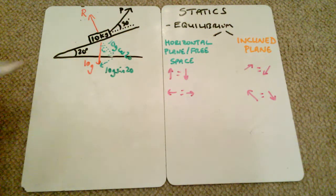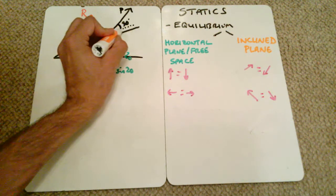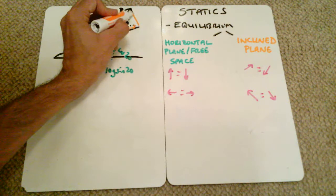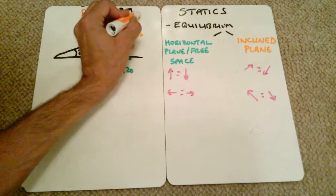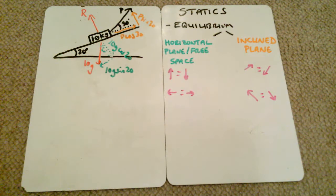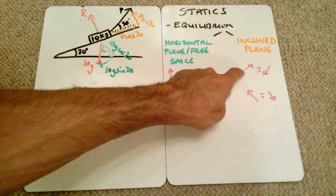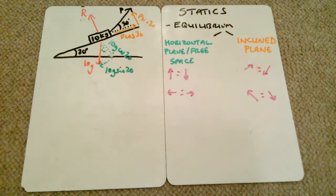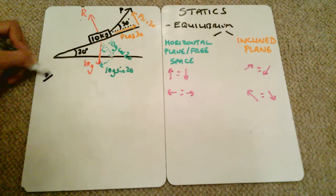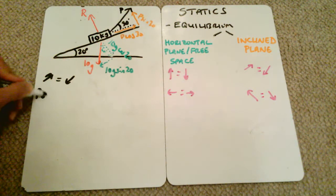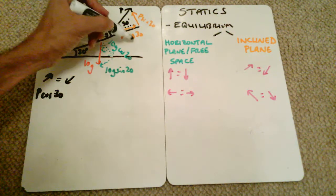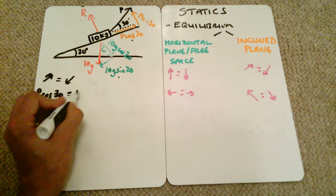We also need to resolve force P, as it's not acting parallel or perpendicular. Extending the line and drawing the perpendicular, we get the parallel component P cos 30 and the perpendicular component P sin 30. There are two unknowns — R and P. We look at forces parallel up and down the slope first. Up the slope is P cos 30, and down the slope is 10g sin 20.